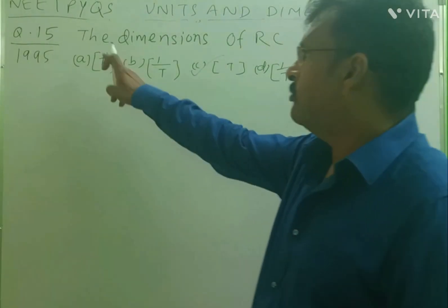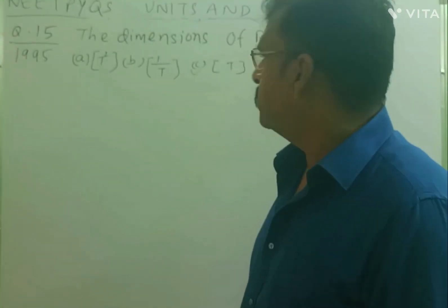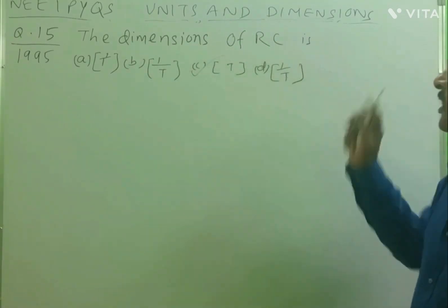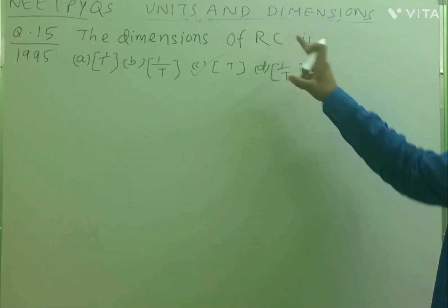Students, this is question number 15 and this was asked in the year 1995. The dimensions of RC. R is resistance, C is capacitance.